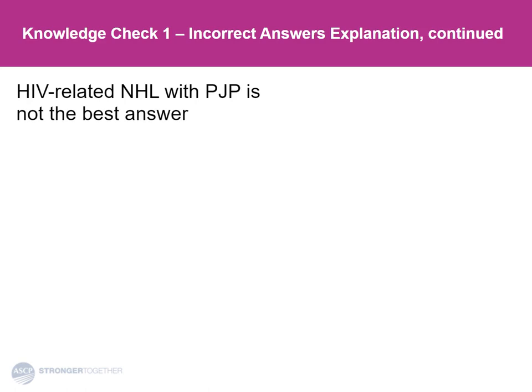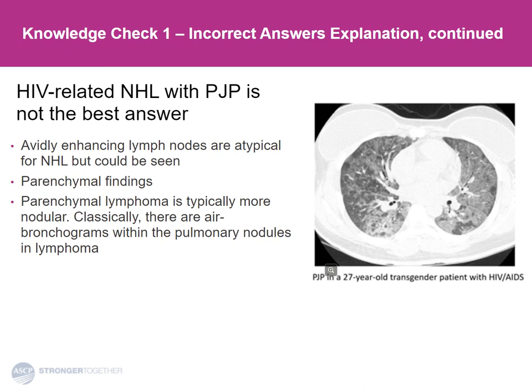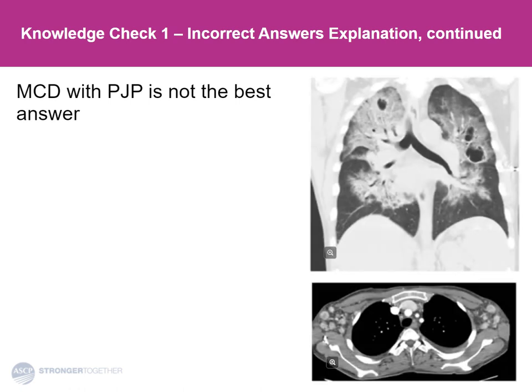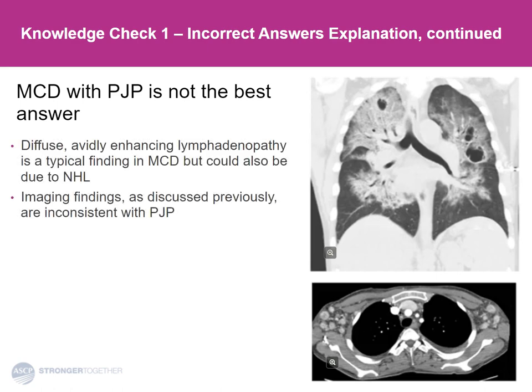What about non-Hodgkin's lymphoma with pneumocystis pneumonia? The parenchymal findings really don't look like pneumocystis. This is what pneumocystis classically looks like — a 27-year-old transgender patient with HIV, uncontrolled with AIDS. You can see the diffuse ground glass, some areas of lobular sparing, and if you look very closely, it almost looks like a mesh framework within the areas of ground glass, which is what we call a crazy paving pattern. Here is a patient with multicentric Castleman disease and pneumocystis pneumonia — avidly enhancing lymph nodes from the Castleman disease, but with pneumocystis pneumonia showing ground glass with crazy paving, and cystic change, which we occasionally see with multiple episodes of pneumocystis. So the best answer for that case really was multicentric Castleman disease and Kaposi's sarcoma.